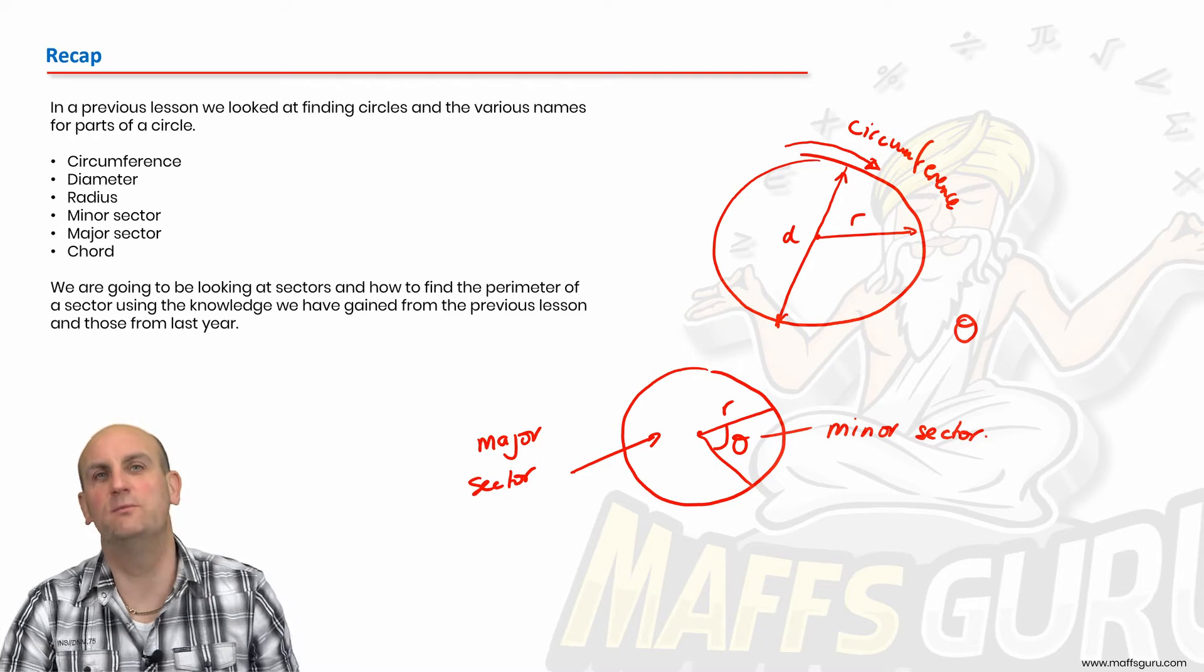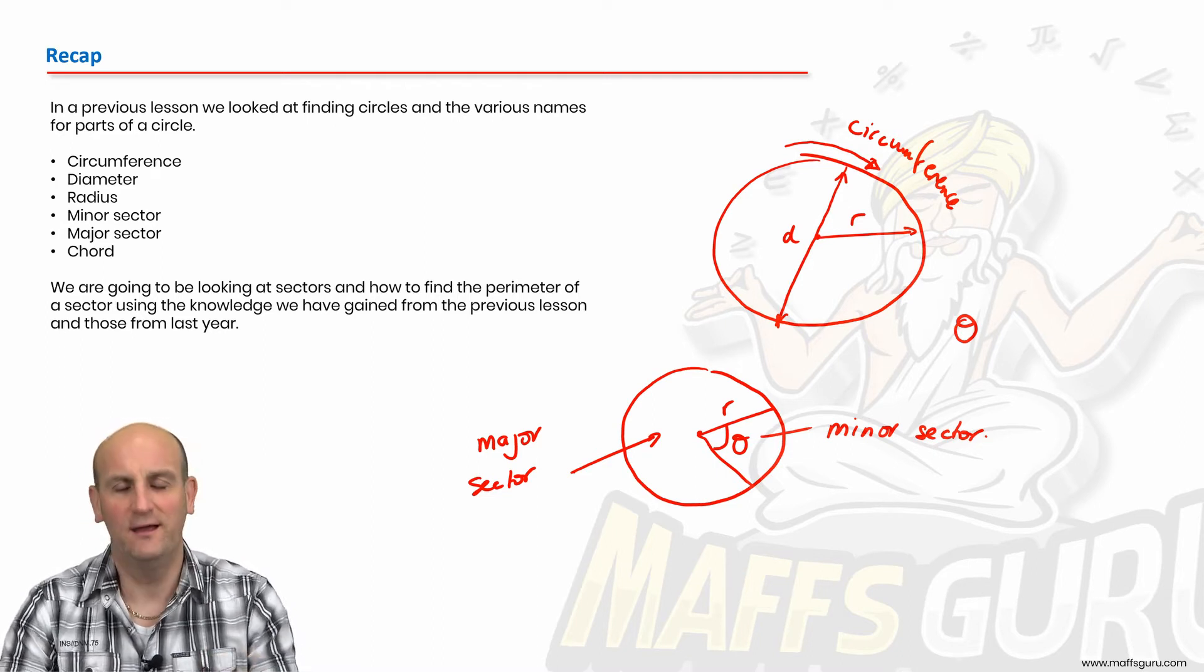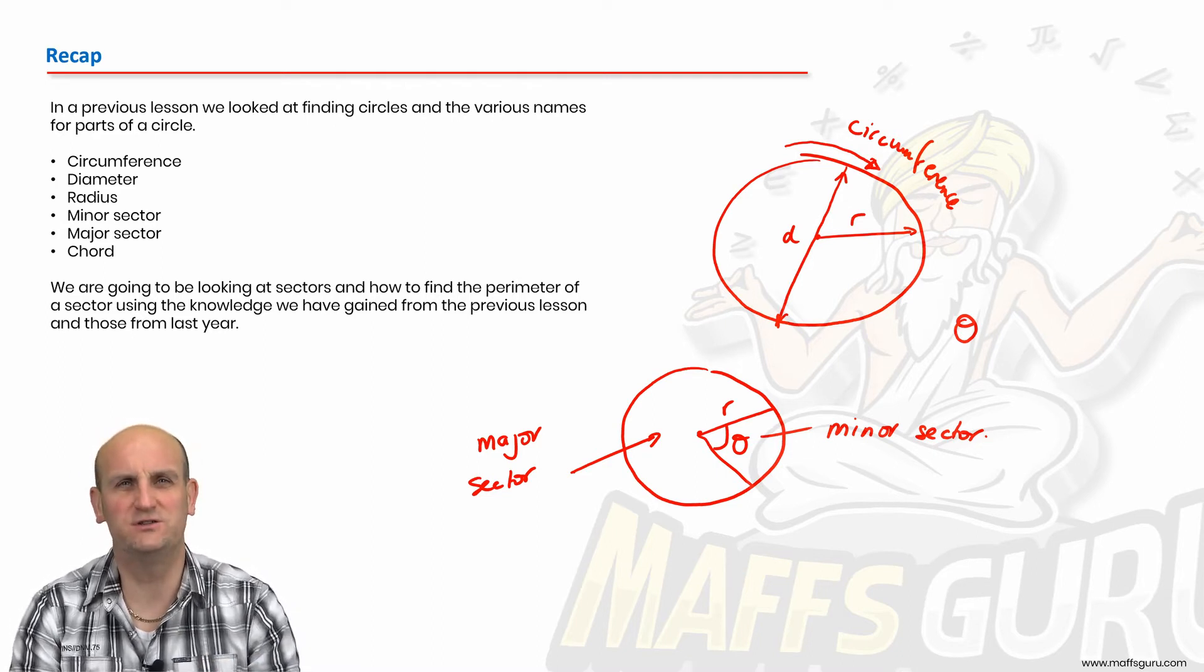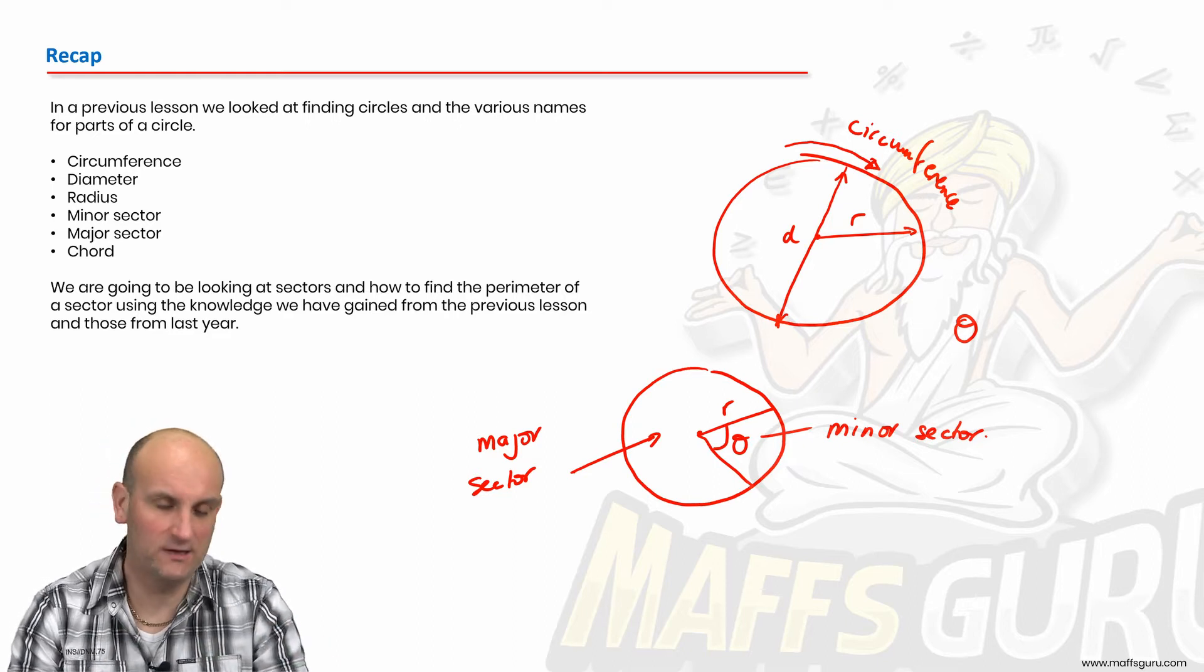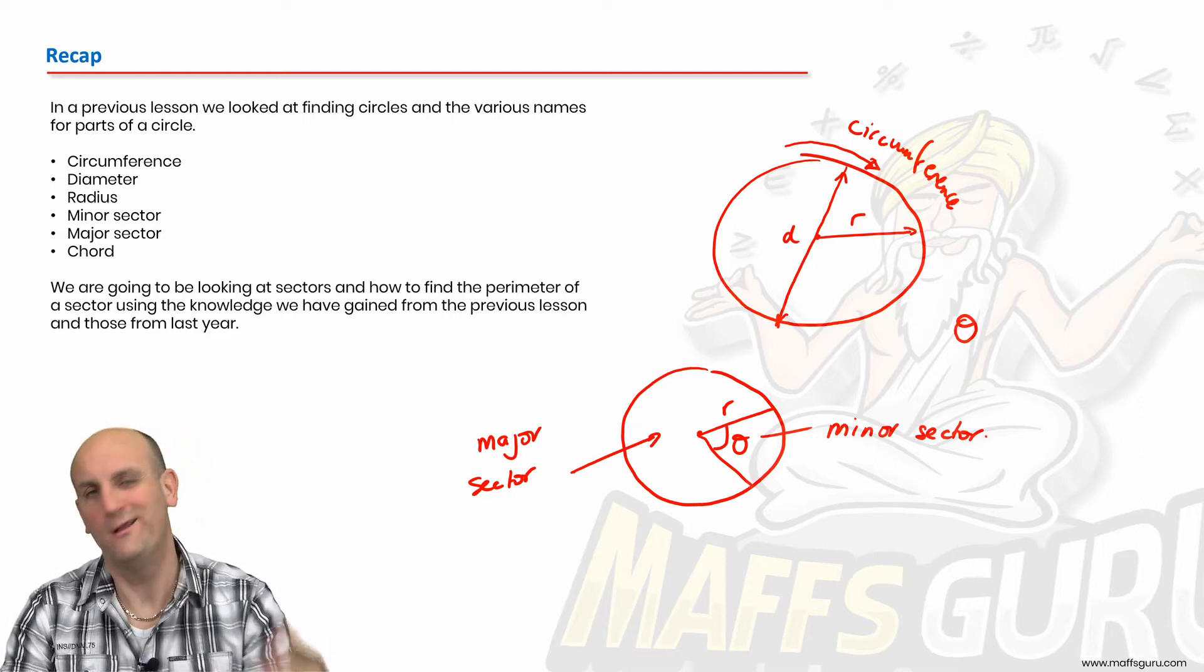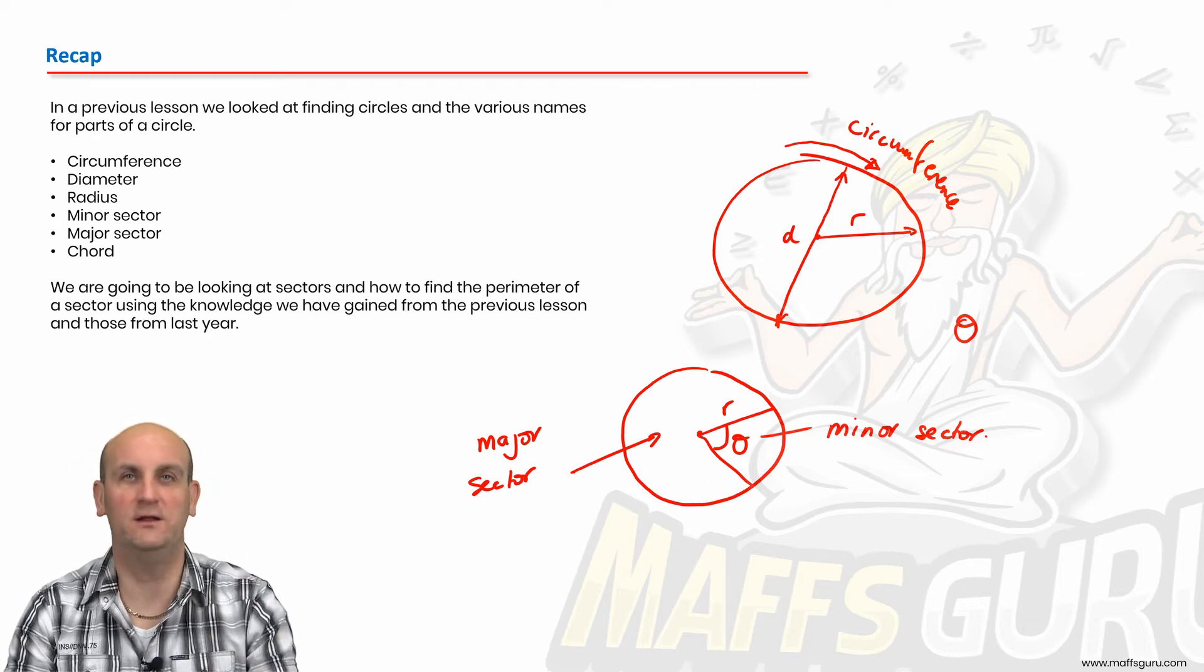All you need to know for a minor sector or a major sector is the radius and some sort of angle. Now notice there I did that Greek symbol called theta, or theta, that a lot of us use to just stand for an angle. But it doesn't have to be that. It can be all sorts of letters.